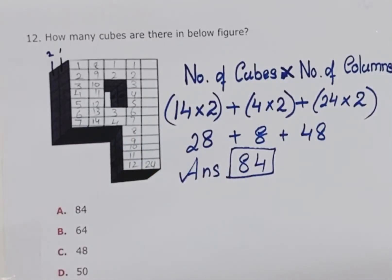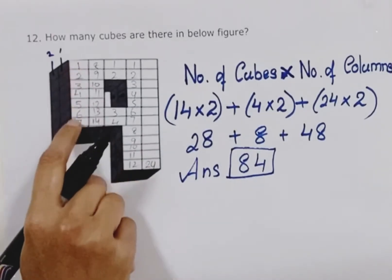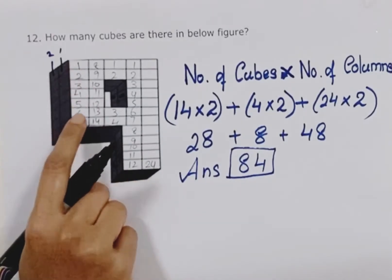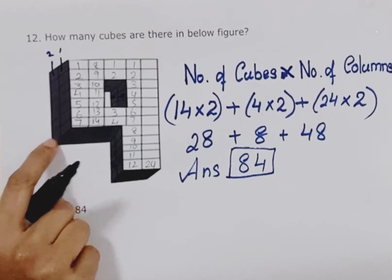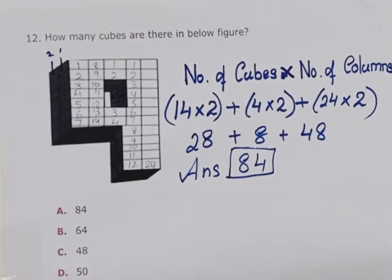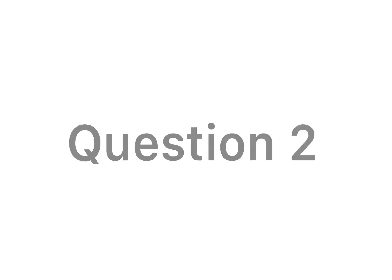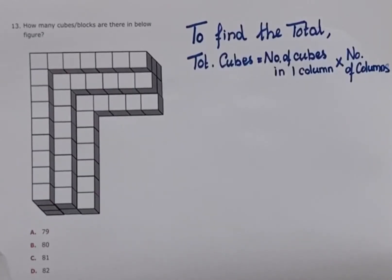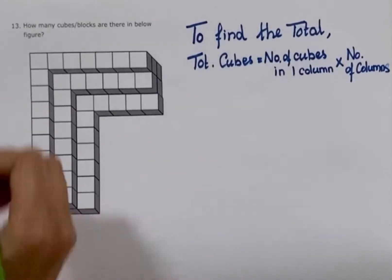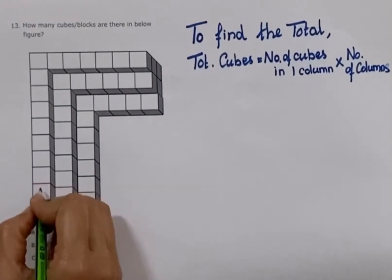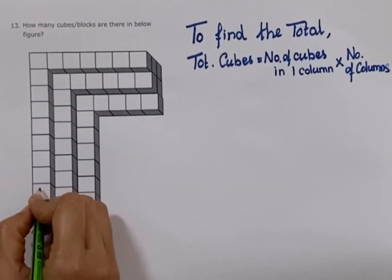To find the number of cubes, just check the number of small cubes and multiply with its column. Now let's count the total cubes in the next figure. For that, we have to count the cubes in one column.